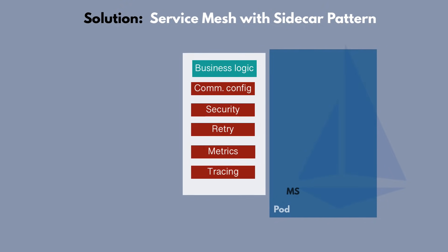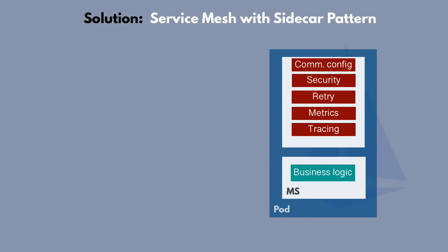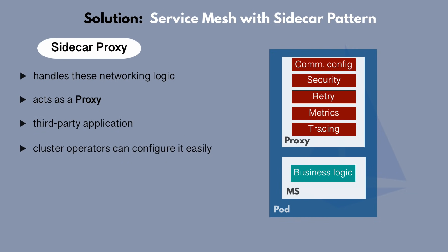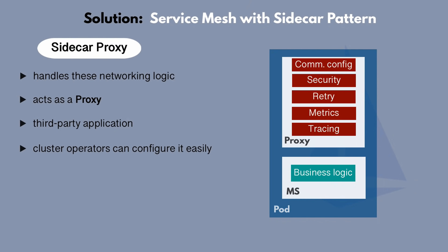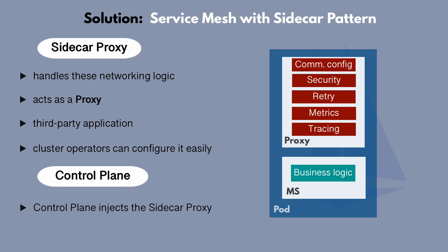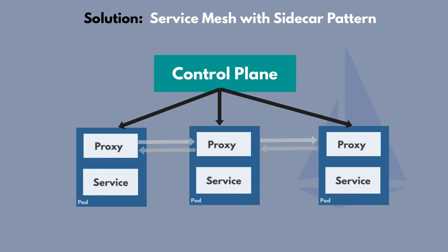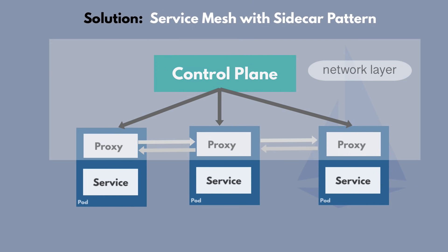Wouldn't it make more sense to extract all the non-business logic out of the microservices and into its own small sidecar application that handles all this logic and acts as a proxy? This small application is a third-party application that cluster operators can easily configure through a simple API without worrying about how the logic is implemented. Developers can now focus on developing the actual business logic, and you don't have to add sidecar configuration to your microservice deployment YAML files because the service mesh has a control plane that will automatically inject this proxy into every microservice pod. The microservices can then talk to each other through those proxies, and this network layer — consisting of the control plane and the proxies — is a service mesh.